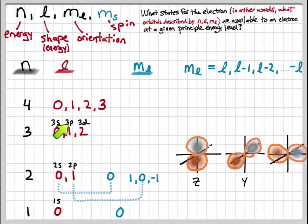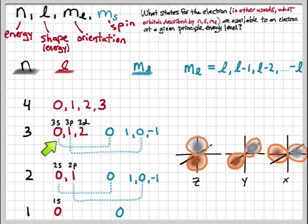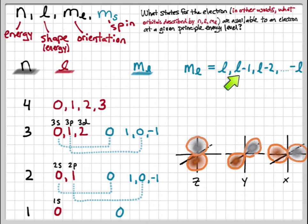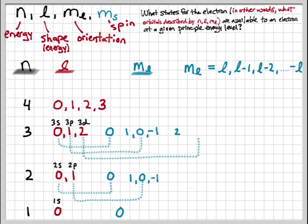Every p orbital regardless of level — for example a 3p orbital with l equals 1 — has three orientations; the orbitals at higher levels are just larger. At the third level we have a 3s orbital with one ml value, a 3p orbital with three orientations (ml values of 1, 0, negative 1), and a d orbital with l equals 2, giving ml values of 2, 1, 0, negative 1, and negative 2 — five orientations total.